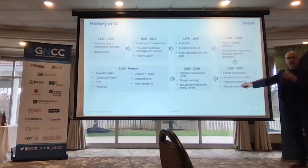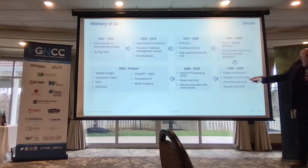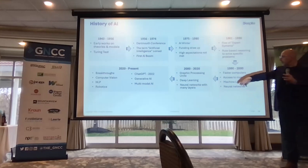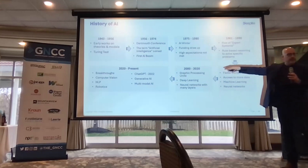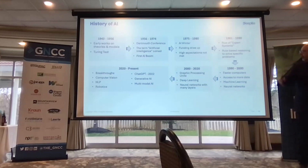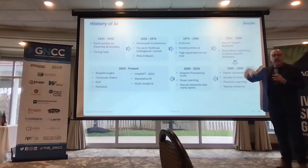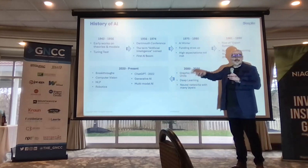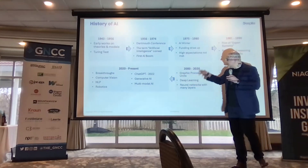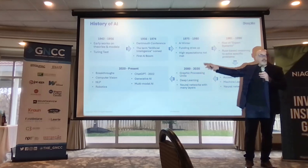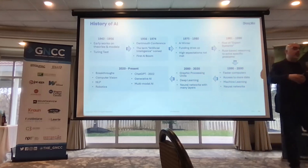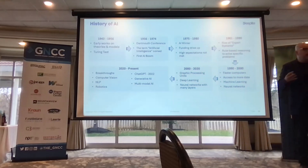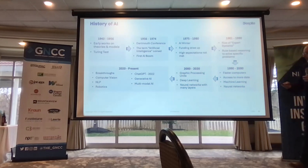That's where machine learning comes in — a subset of AI. And the concept of neural networks, along with GPUs, really took off from 2000 to 2020. All of a sudden we're getting breakthrough technologies: computer vision, natural language processing, robotics, generative AI, and ChatGPT. These are all things that can now be done because of the computing horsepower behind the technology.